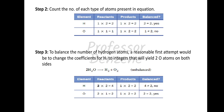First, count the number of each type of atom present in the equation — which atoms are present and how many on each side. For hydrogen: left side has 2 atoms (from H2O), right side has 2 atoms (from H2), so H is balanced. For oxygen: left side has 1 atom, right side has 2 atoms — O is not balanced.